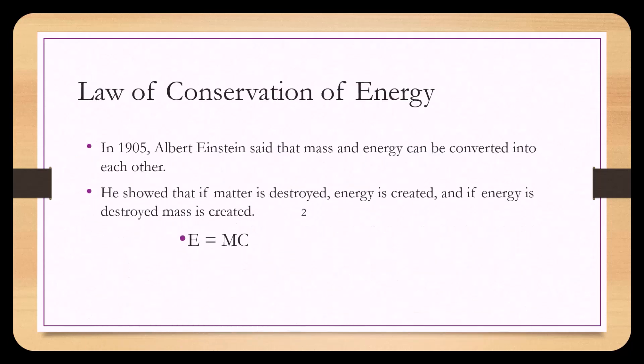The law of conservation of energy holds true under ordinary means, but under certain extraordinary circumstances — such as those involving a nuclear reaction or high-speed particles — energy can indeed be converted into mass, and mass can be converted back into energy. In 1905, Albert Einstein said that mass and energy can be converted into each other. He showed that if matter is destroyed, energy is created, and if energy is destroyed, mass is created. This was under his famous equation E equals MC squared.